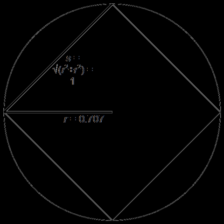The name comes from the Latin radius, meaning ray but also the spoke of a chariot wheel. The plural of radius can be either radii or the conventional English plural radiuses.